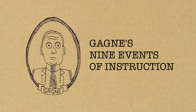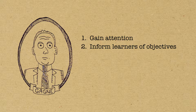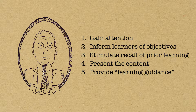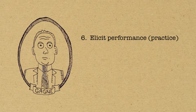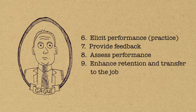Robert Gagné's Nine Events of Instruction make up an effective instructional design model that addresses the conditions necessary for learning. There are nine events in the model: gain attention, inform learners of objectives, stimulate recall of prior learning, present the content, provide learning guidance, elicit performance, provide feedback, assess performance, and enhance retention and transfer to the job.